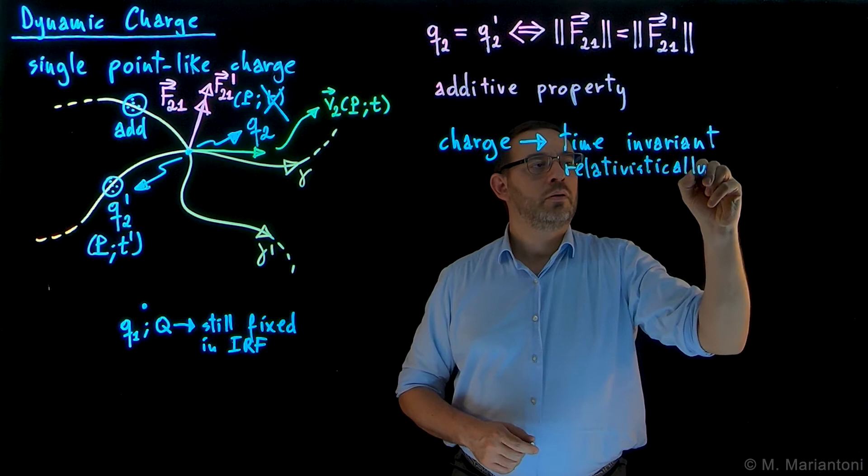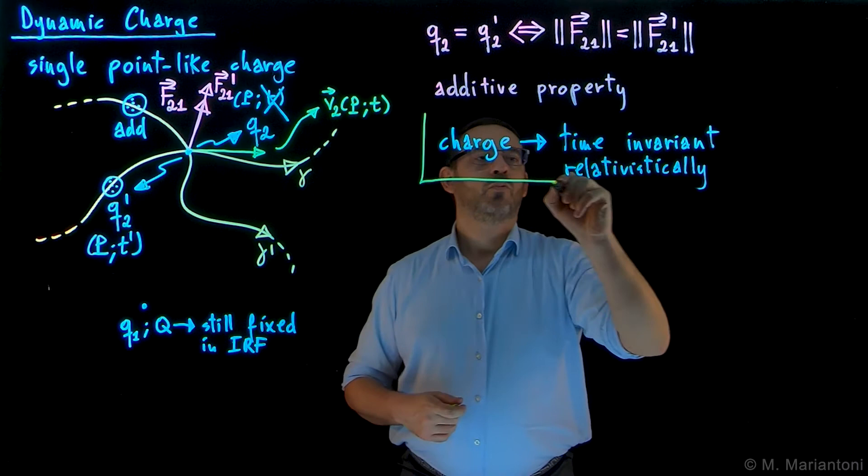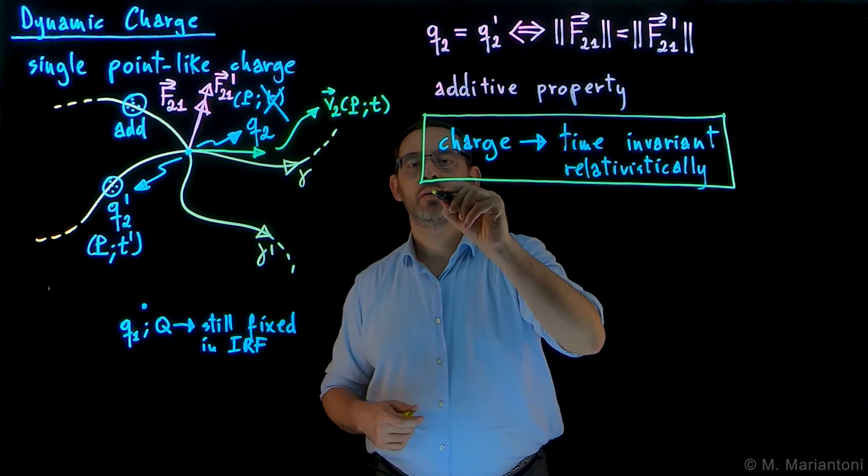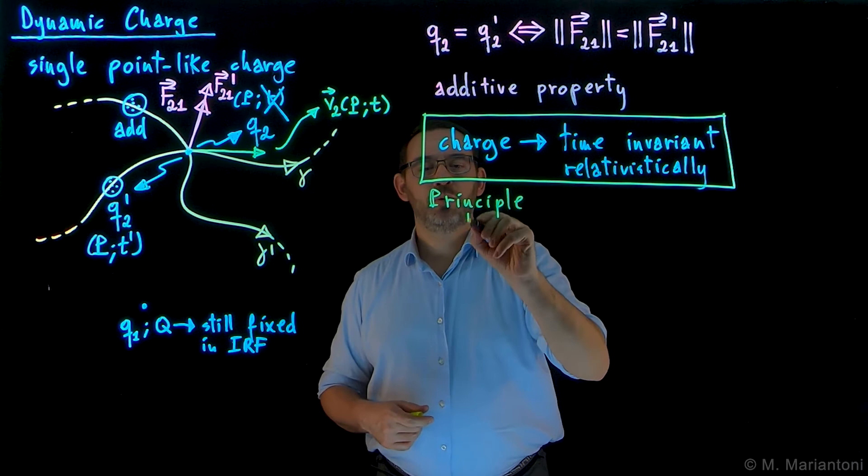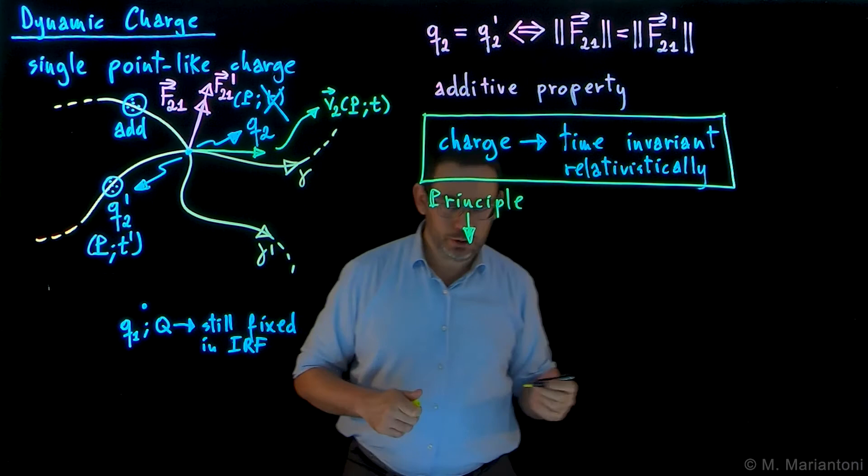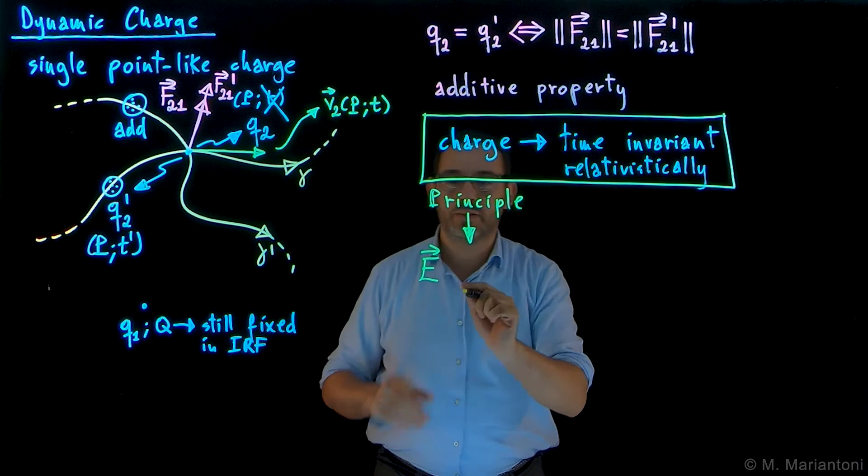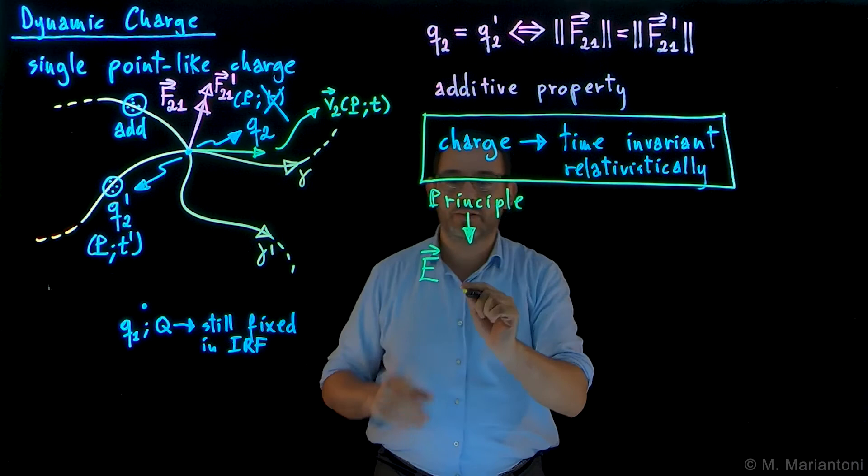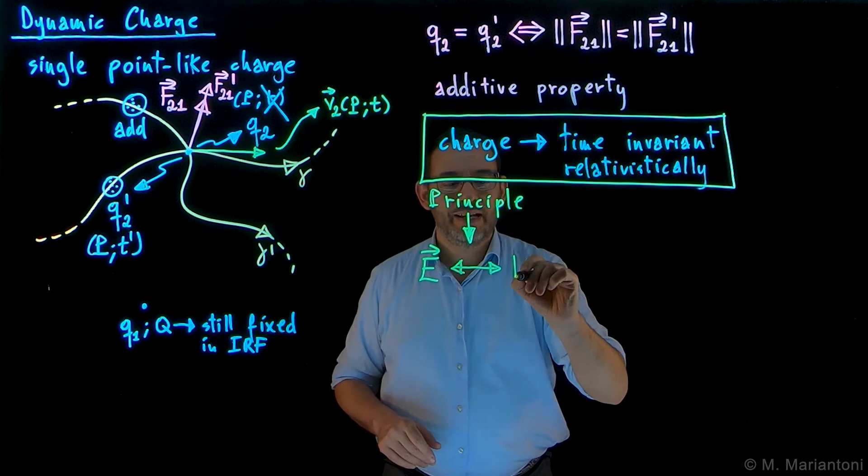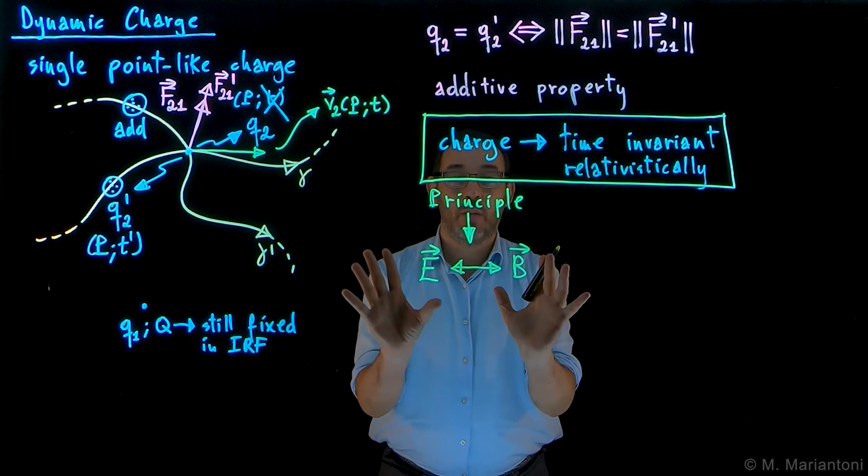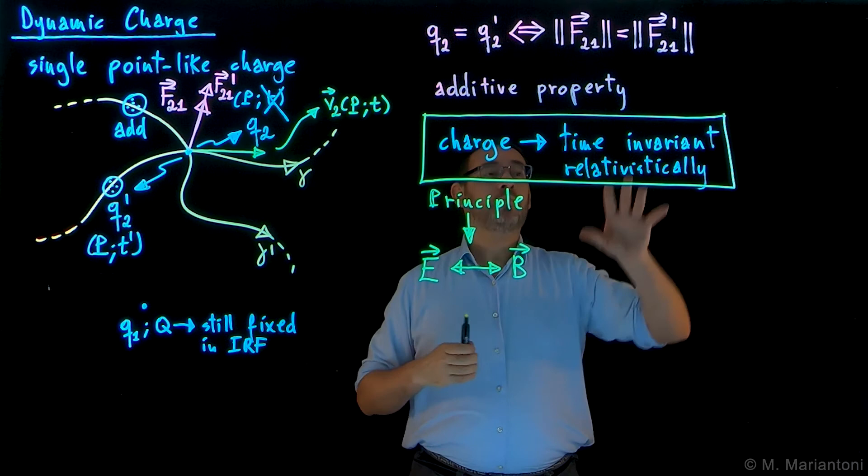Actually, this relativistic time invariant, which if you want is a principle of physics - this principle is the principle which eventually will allow us, not in this course but in 342, in the very beginning of 342, to show that the electrostatic field E, or more in general the electric field E, and a new quantity which we're about to discover, the magnetic field B, are basically one and the same phenomenon. You need to use this relativistic time invariant of charge in order to prove this, in conjunction with Lorentz's force, which is the topic of a video coming up soon.